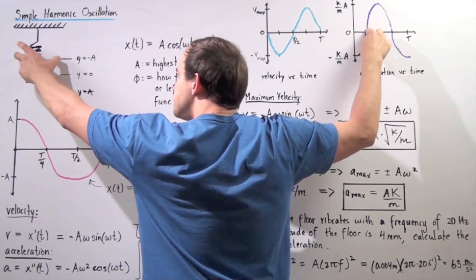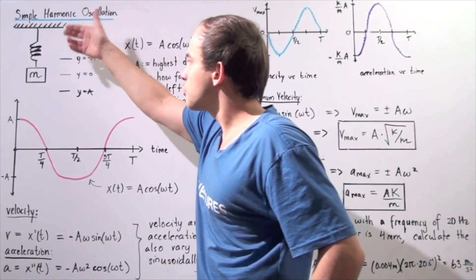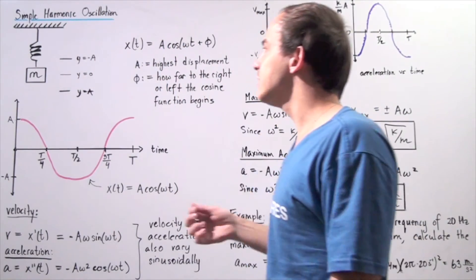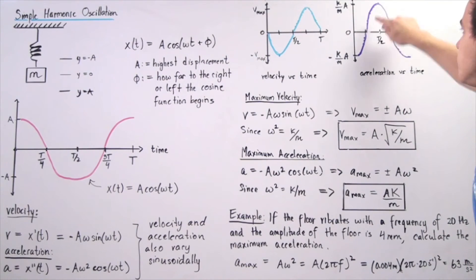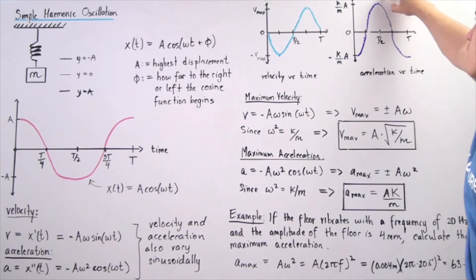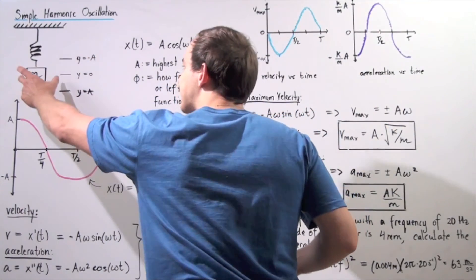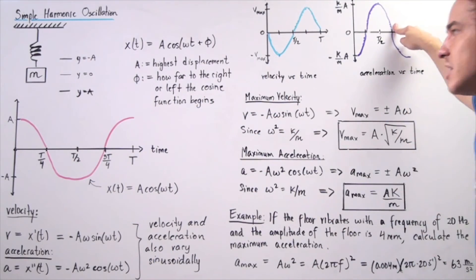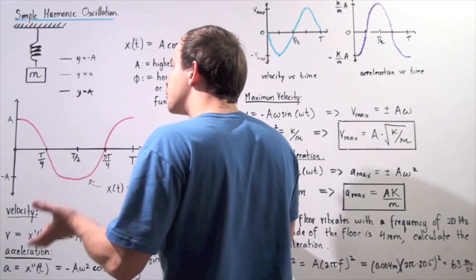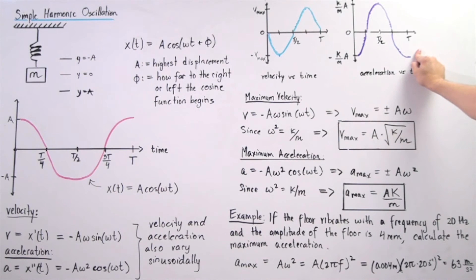When the mass reaches the opposite extreme (negative A) at t = T/2, the spring creates a compressive force at maximum, so the acceleration is again at its maximum. When it returns to the equilibrium point, acceleration drops back to 0 because the force at that point is 0. And when it finally returns to its initial position, the acceleration once again reaches its maximum value.